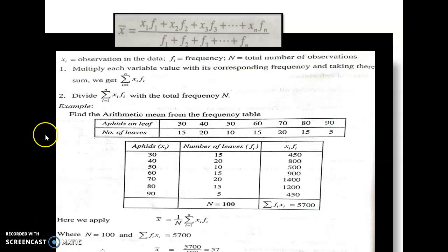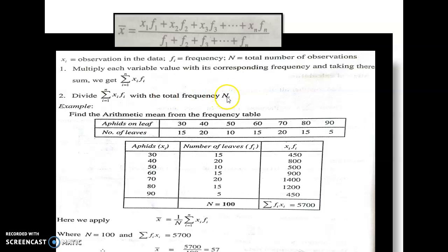Here, xn is the observation of the data, fn is the frequency, and n is the total number of frequencies. Multiply each variable with its corresponding frequency.